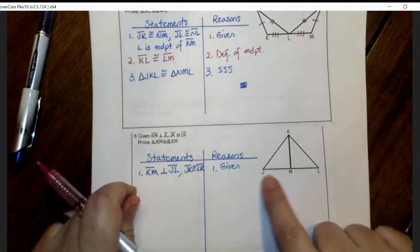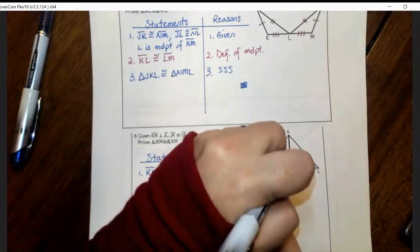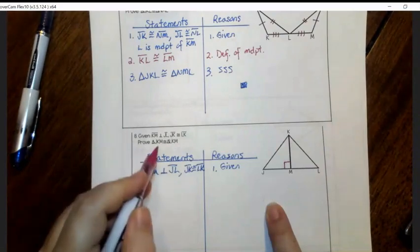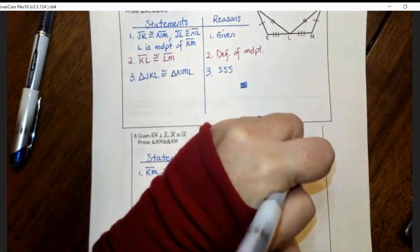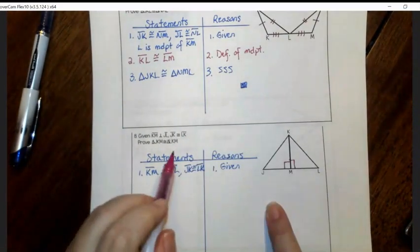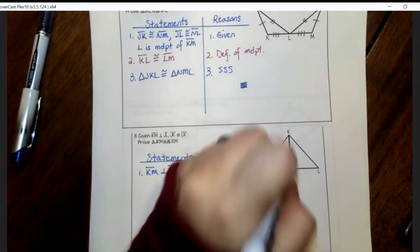So if KM is perpendicular to JL, I can mark that this is a right angle. And that also means it's a right angle on that side. It also tells us that JK is congruent to LK.